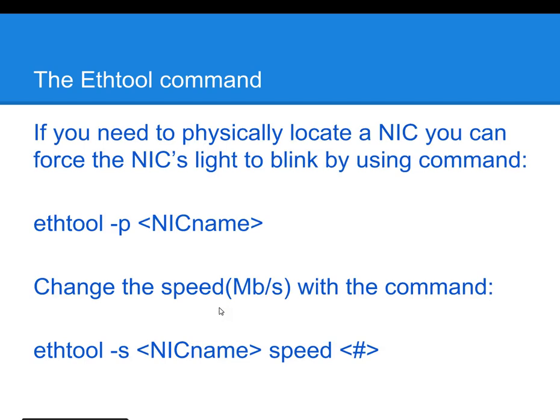If you wanted to physically locate your network interface card for the purposes of replacing it, you can type 'ethtool -p' and then the name of your network interface card. If you wanted to change the speed of your network interface card, you could type 'ethtool -s', the name of the network interface card, then the word 'speed', and then the speed that you would like to change to. Here is an example of that.